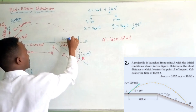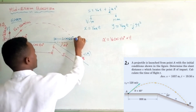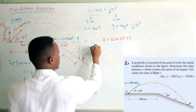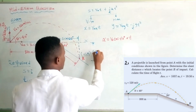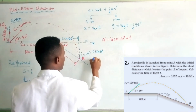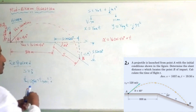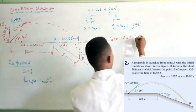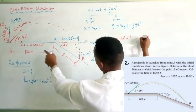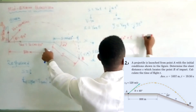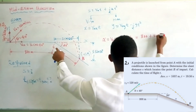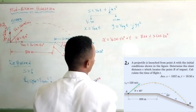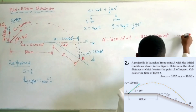This horizontal distance becomes S times cosine 20 degrees. The x-displacement equals S cosine 20 degrees and is positive — this is equation 1.